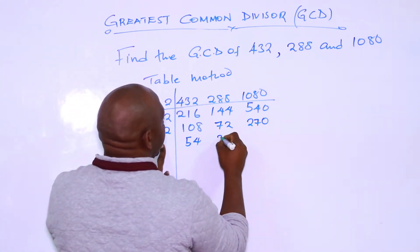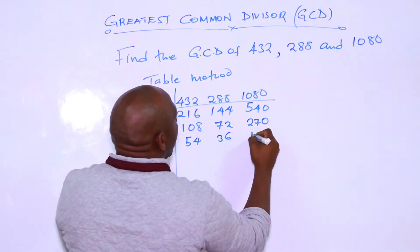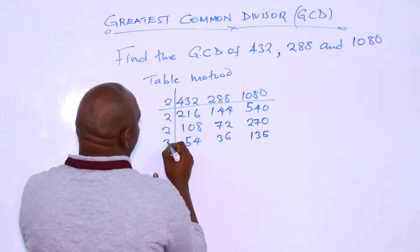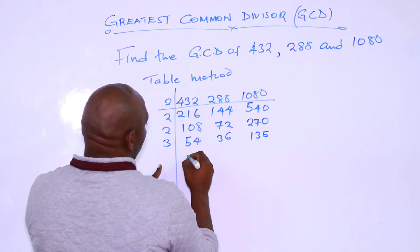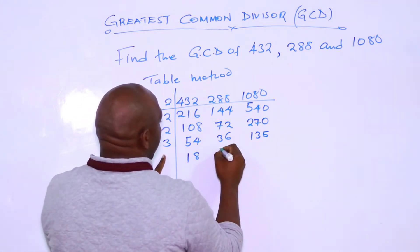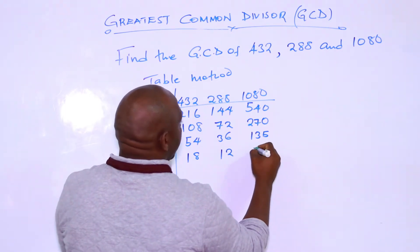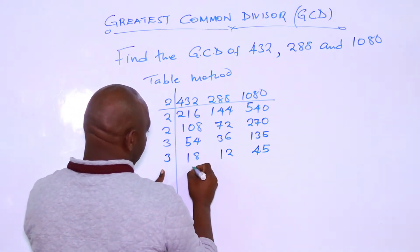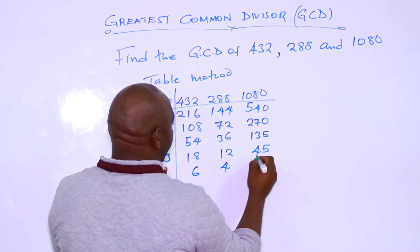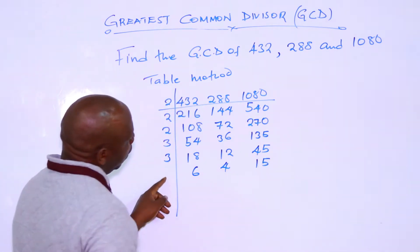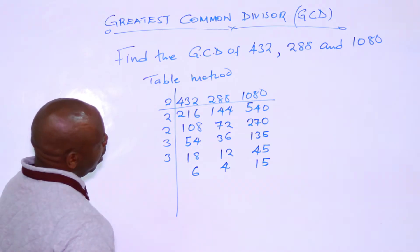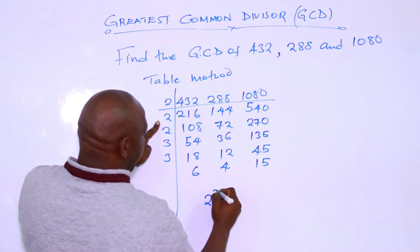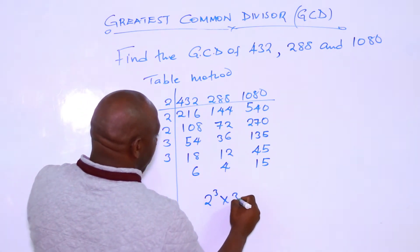By 2, you get 36. By 2, you get 18. By 2, you get 135. By 3 — 3 is common — by 3 you get 18, 12, and 45. Again by 3, you get 6, 4, and 15. By 3, you get 2. By 3, you get 1 and 5. And nothing else is common. Therefore, our GCD is 2 to the power 3 times 3 to the power 2.